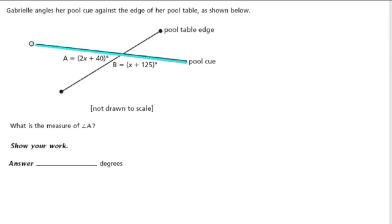And here, the pool table edge, okay, right along here, is also being represented as a line. So we really have the intersection of two lines here, and angle B and A are right here. So here's B, angle B is right here,